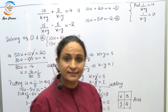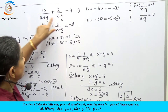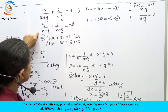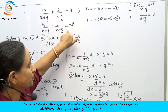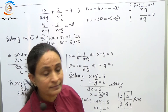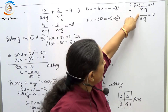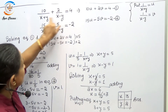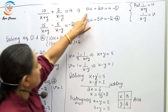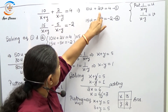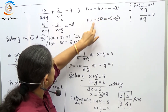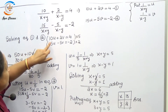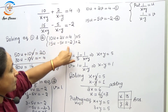In the next question: 10/(x+y) + 2/(x−y) = 4 and 15/(x+y) − 5/(x−y) = −2. Substituting 1/(x+y) = u and 1/(x−y) = v, the equations become 10u + 2v = 4 (equation 1) and 15u − 5v = −2 (equation 2).